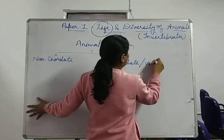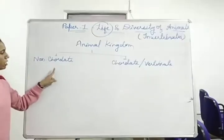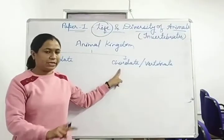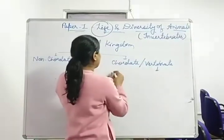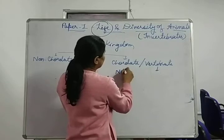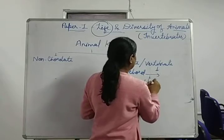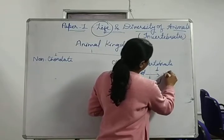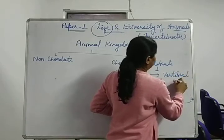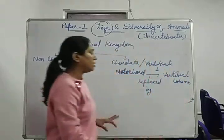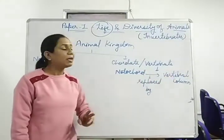Non-cordate means notochord is absent. Cordate means notochord is present. What is vertebrate? Vertebrate means all those animals in which notochord is replaced by the vertebral column — that means the notochord is replaced by the vertebral column.